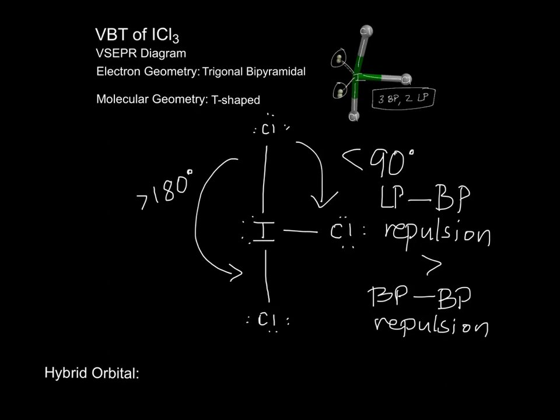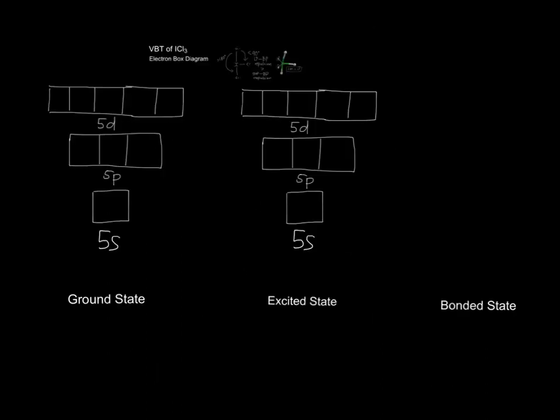Due to iodine trichloride's molecular geometry, we know that there are five orbitals. This results in iodine trichloride's hybrid orbital to be sp3d. This would then help us lead to determining the box diagram showing its hybridization. To draw the electron box diagram, we focus on the central atom, which in this case is iodine.